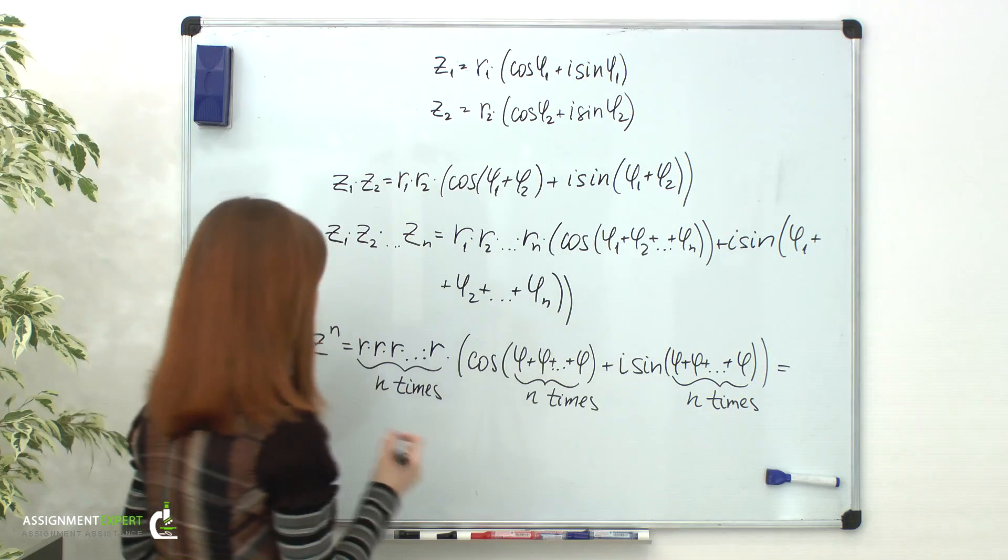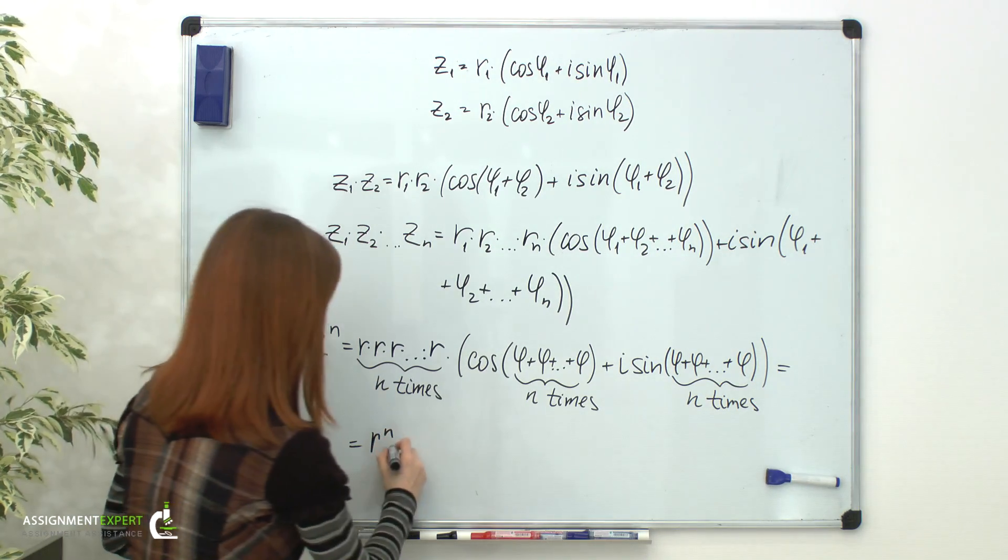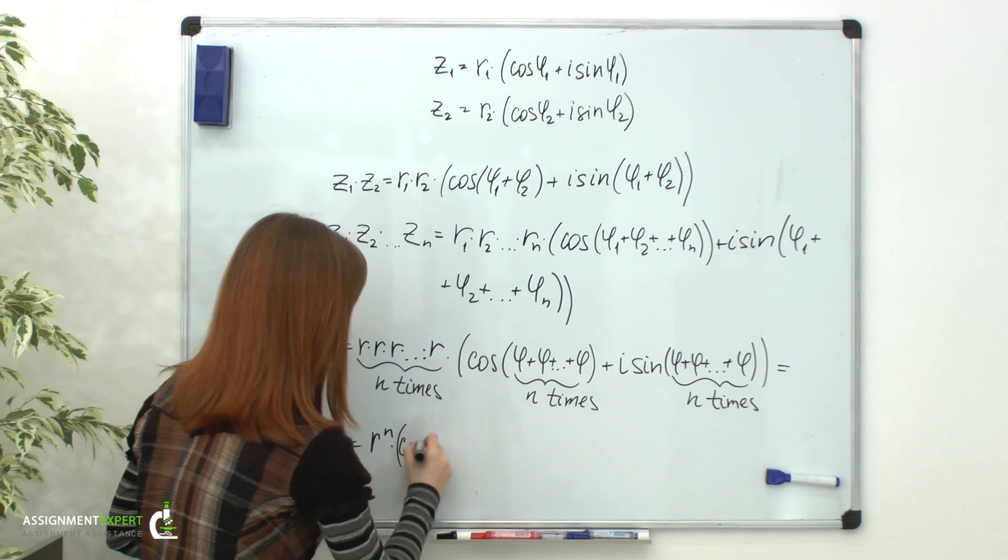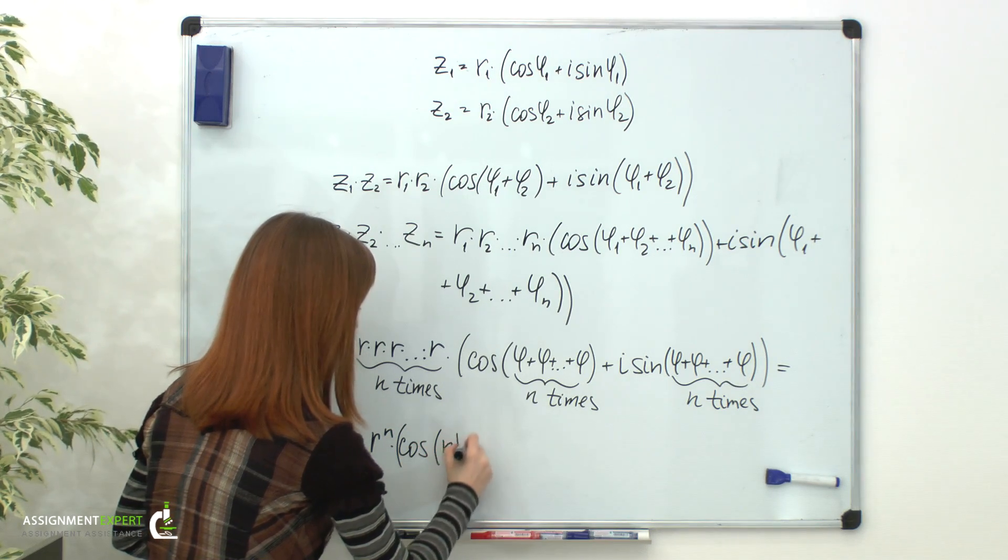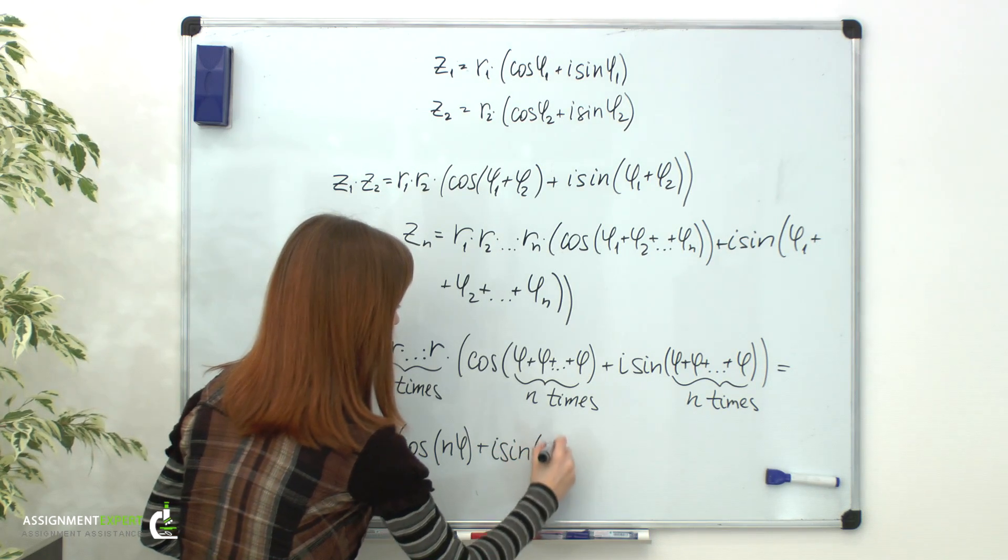Which brings us to the formula: r to the nth times cosine of n phi plus i sine of n phi.